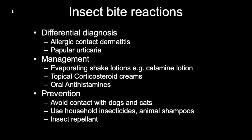Treatment of insect bites is application of a topical corticosteroid to decrease inflammation and oral intake of an antihistamine for pruritus. Prevention will depend on where the source of the bites are from. If they are from the home, then bug sprays or insecticides may help. And if it's from their pets, then a visit to the veterinarian or treatment with medicated dog or cat shampoo is advised.